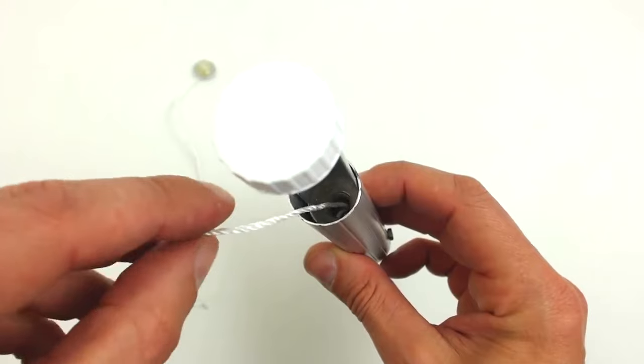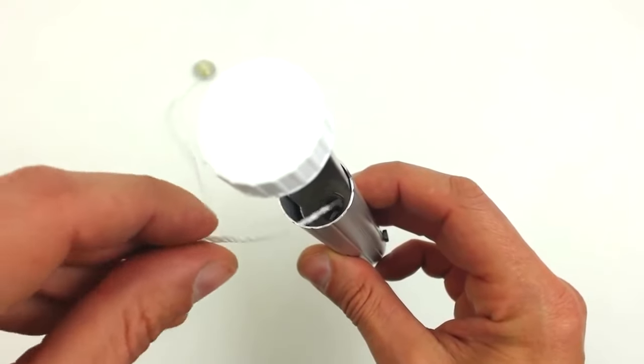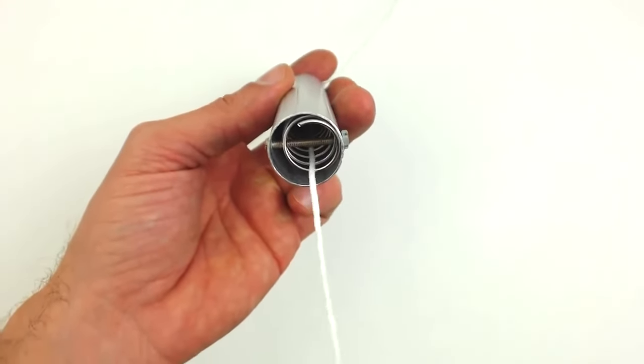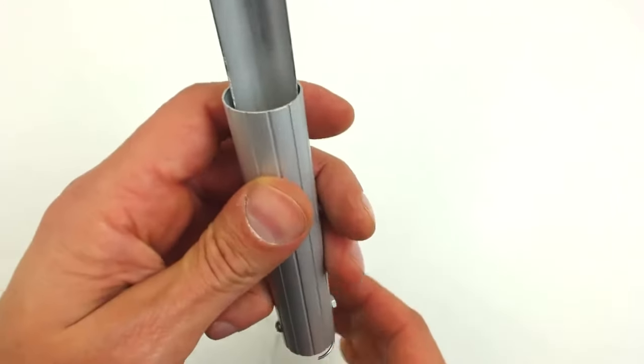Once it is done, we insert it as shown in the video. This rope will break the inner part we built by the spring, preventing it from falling out.